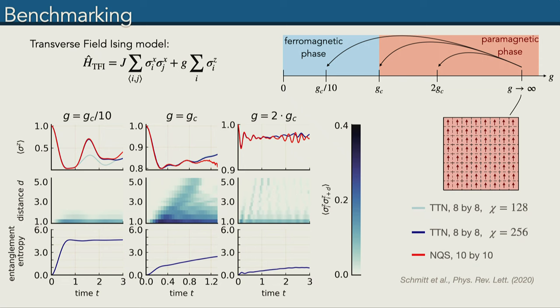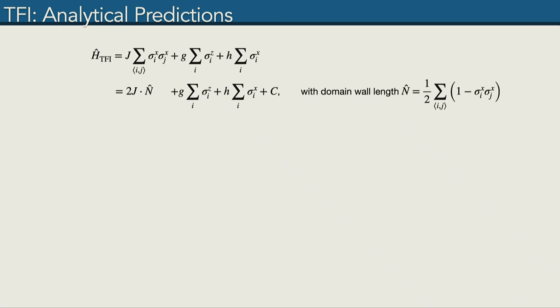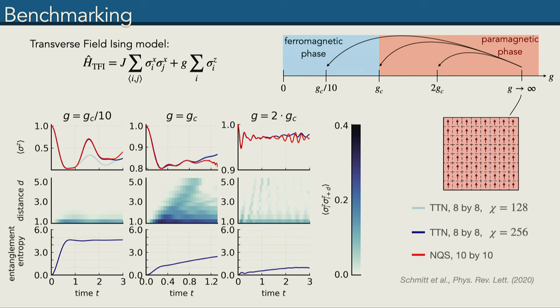Our results are the blue lines, the Tree Tensor Network results for an 8x8 system, and we have benchmarking results from Neural Quantum State simulations for a 10x10 lattice. In the top row, you can see the time evolution of the total magnetization of the system for these three different quenches. They agree quite well, and even for the most difficult case where we quench into the ferromagnetic phase, bond dimension 128 is not quite enough, but by increasing the bond dimension, we can improve our approximation and reach the benchmarking results. We also have access to correlation functions and entanglement properties.